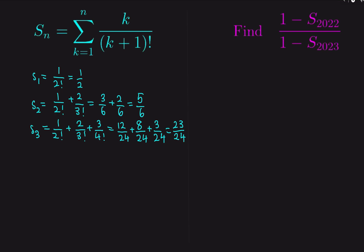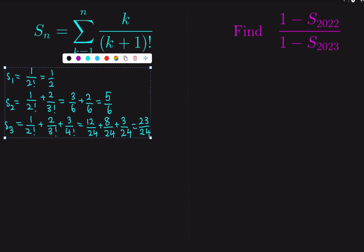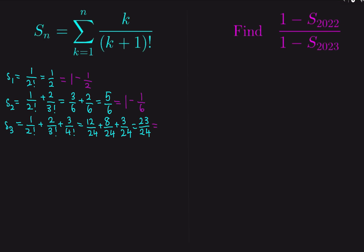Do you notice a pattern here? Notice that 1/2 is 1 minus 1/2 factorial, 5/6 is 1 minus 1/3 factorial, and 23/24 is 1 minus 1/4 factorial. So it seems like S of 1 equals 1 minus 1 over 2 factorial, and S of 2 equals 1 minus 1 over 3 factorial.